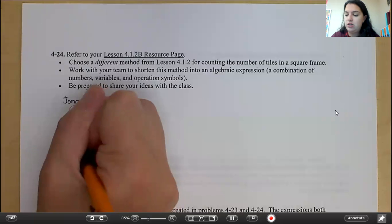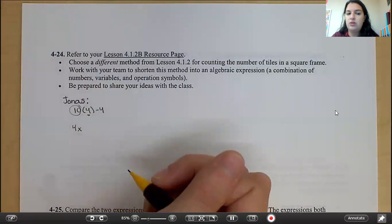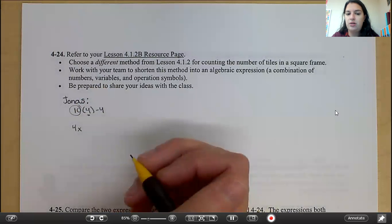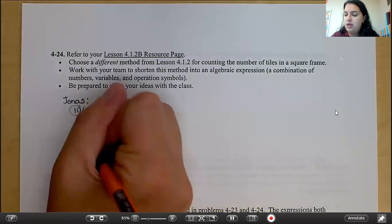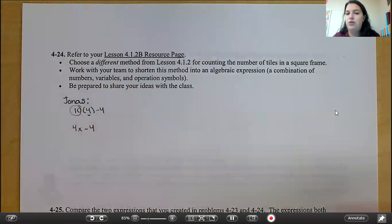We know still that there are four sides. So we would have 4x. x represents the number of tiles on the side length because we don't know how big our figure is. And then you would want to subtract the four overlapping tiles.